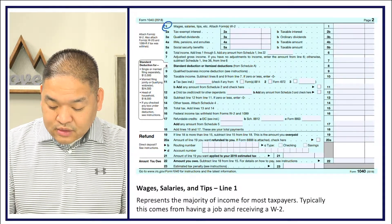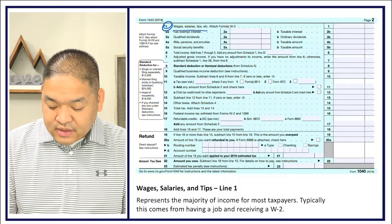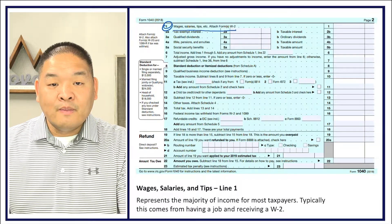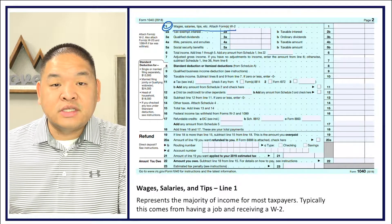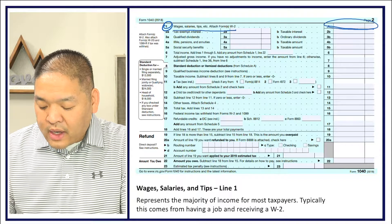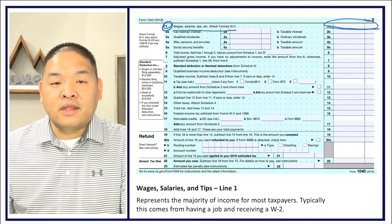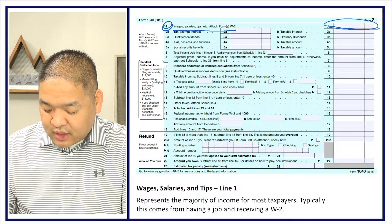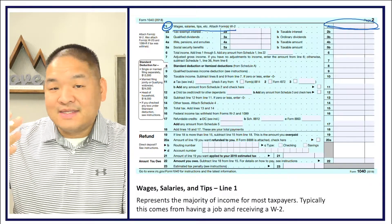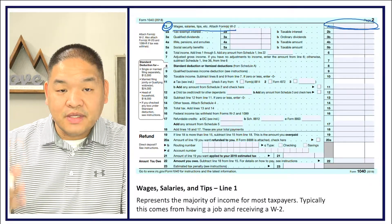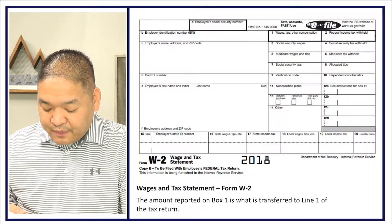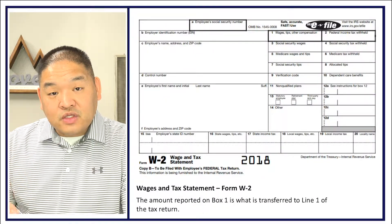Turning to the back of the page, we start with Line 1: wages, salaries, and tips. This is typically from your W-2. If you are an employee, you'll receive a W-2 and that income goes into Line 1. If you're self-employed, it doesn't go here unless your small business issues you a paycheck.